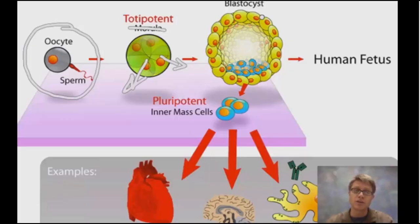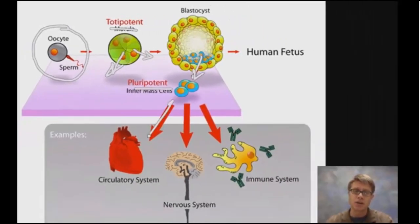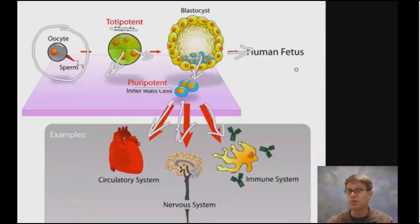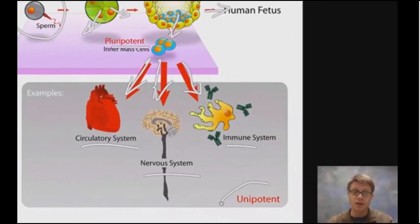But once you've folded into this blastocyst or blastula — a bunch of cells in a circle — if we collect cells at this point, those are called pluripotent stem cells. Pluripotent stem cells are those that could become any other cell, but they're pluripotent, not totipotent, because they can't form a brand new fetus. These cells have the potential to become any other cell — circulatory, nervous, immune system, whatever. Once they've decided what cell they're going to become, they're unipotent and can't become any other cell. They've differentiated at that point.